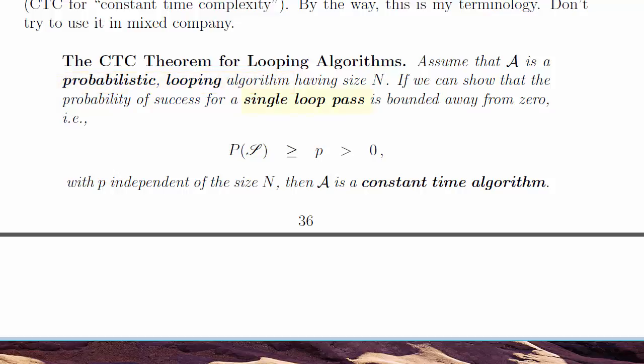It says that if the probability of success of a single loop pass is always greater than some positive minimum number, even one as small as 1 over a billion, then the algorithm has constant time complexity. It does not grow as the number of inputs gets large.